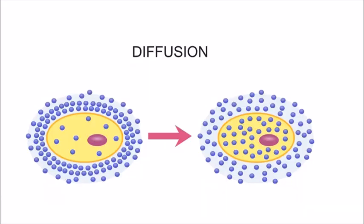Next we have processes that do not consume cellular energy. First is diffusion. Diffusion is the movement of molecules from a region of higher concentration to a region of lower concentration. Liquid molecules or gaseous molecules like carbon dioxide or oxygen show diffusion — they move from the higher concentration region to the lower concentration region.